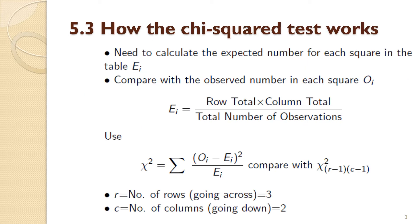The chi-squared test is conducted as follows. You have to calculate the expected number for each cell in the table and compare that with the actual observed numbers from the table. The expected number is calculated as the row total multiplied by the column total, divided by the total number of observations in the sample. The chi-square statistic is a measure of distance between the observed and expected numbers. If they are very similar, the statistic is very small; if the distance is large, the chi-square statistic will also be large.